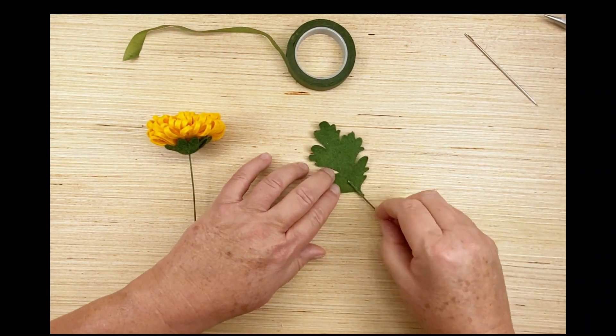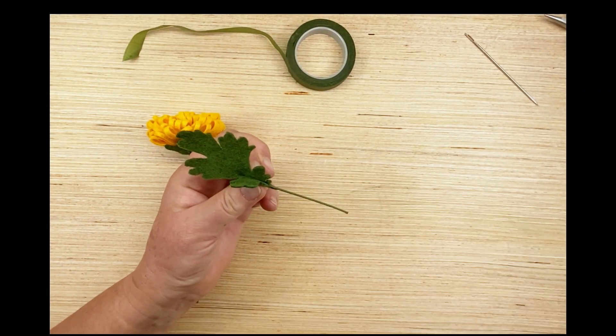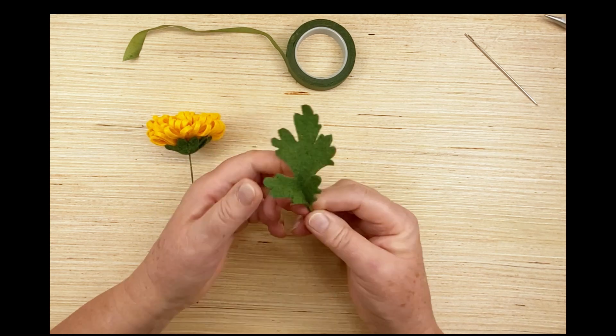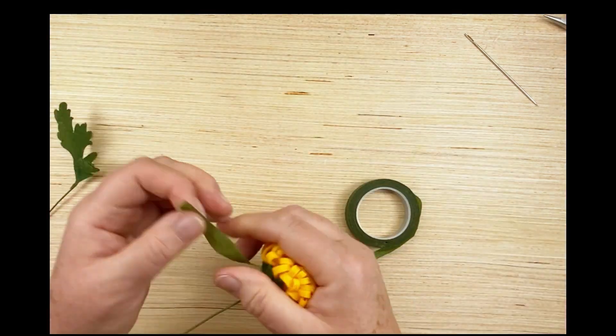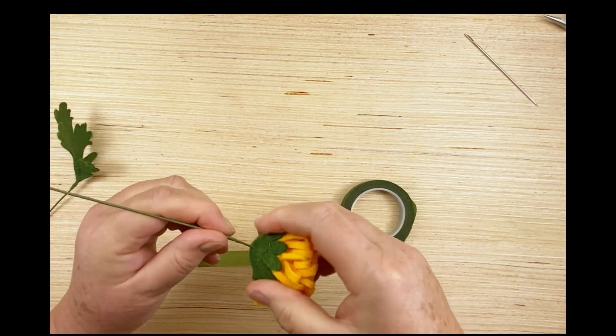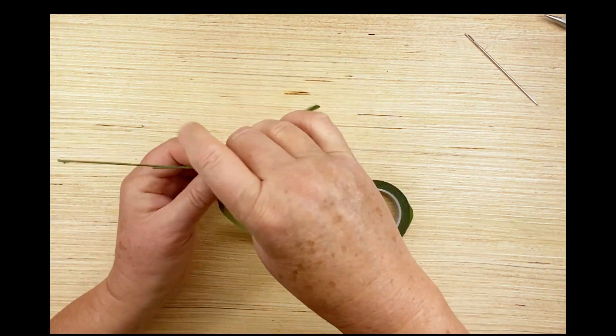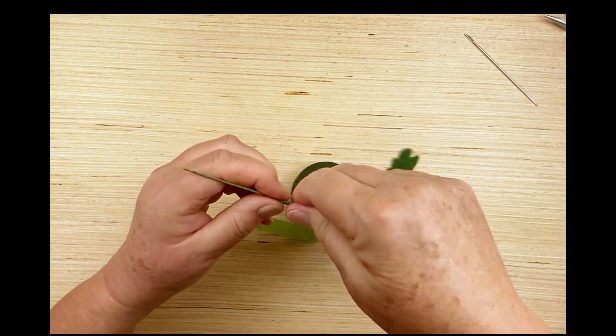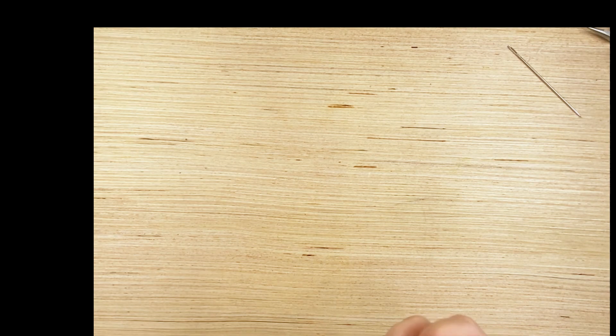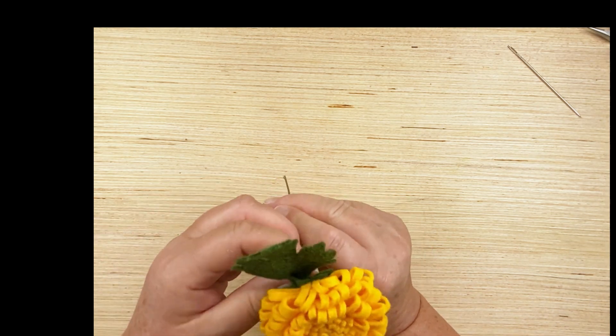Now we can add a leaf to the flower. I don't always add leaves to my flowers because if I'm doing a bouquet I usually add the leaves separately. I'm just using wax florist tape to attach the leaf to the stem of the flower. And there we have it, one pretty chrysanthemum.